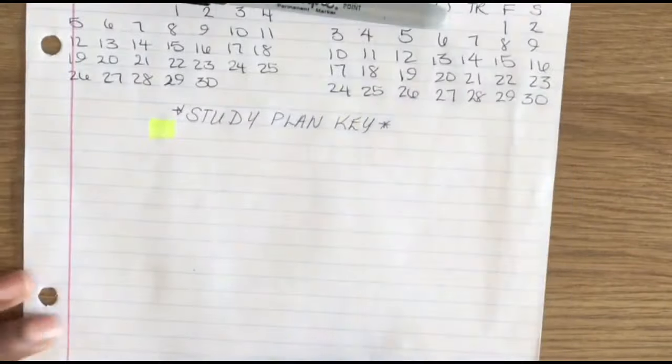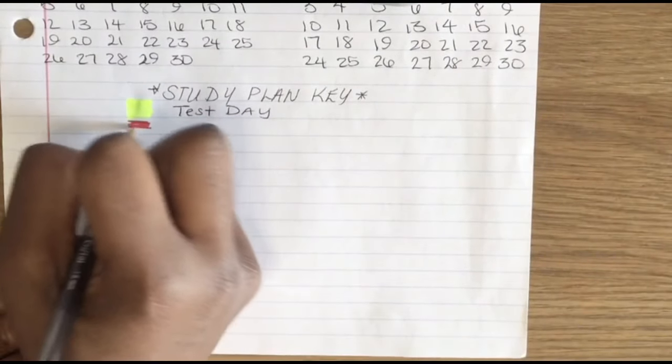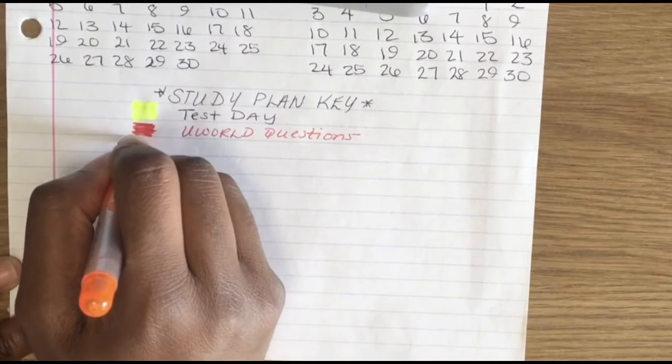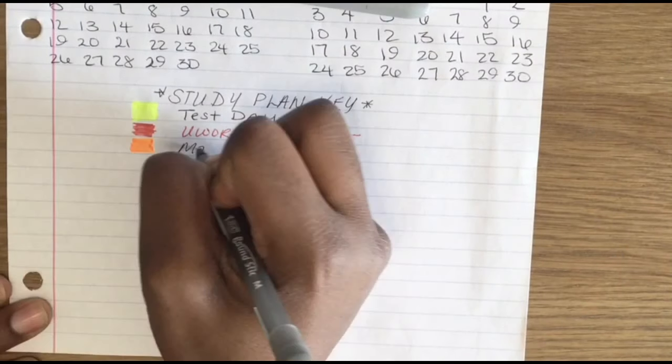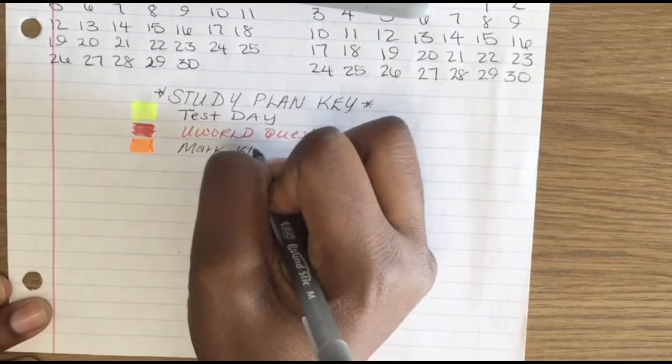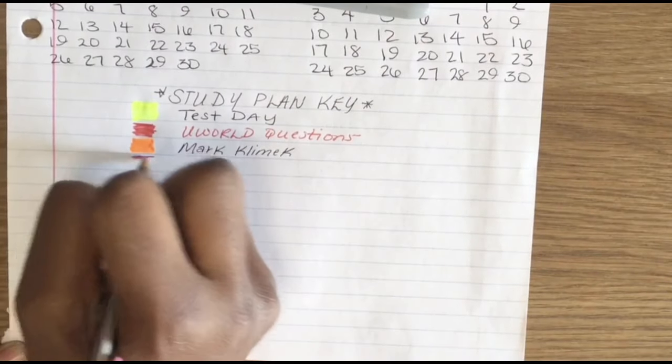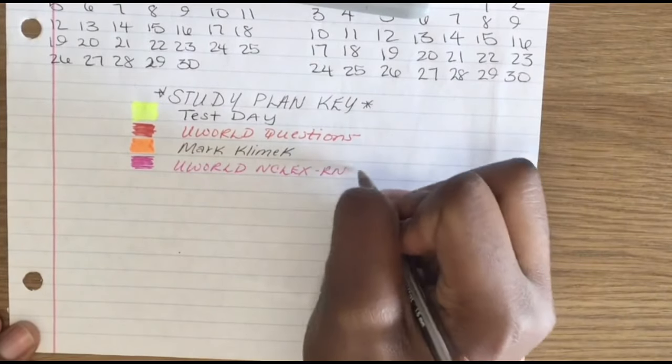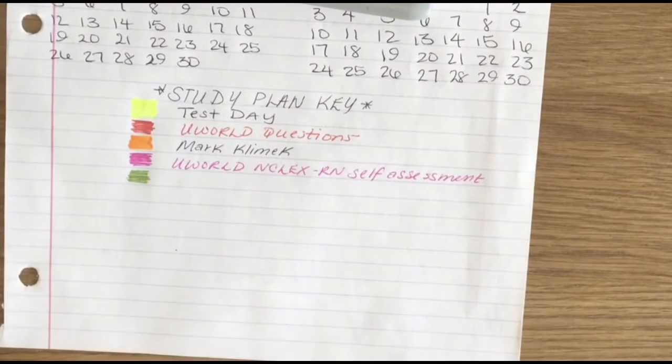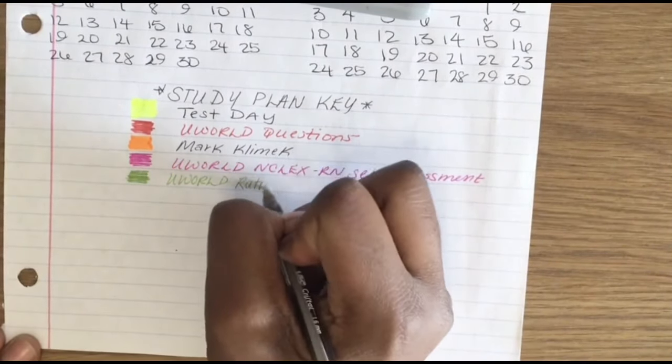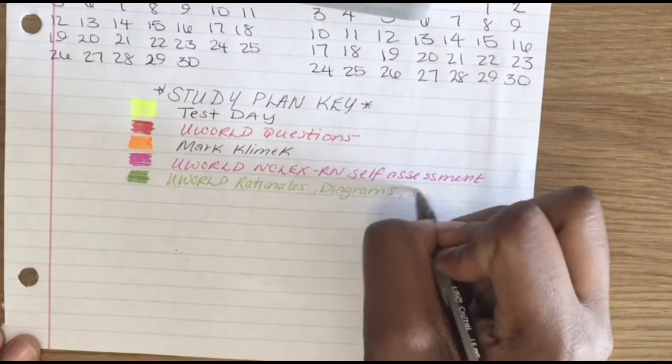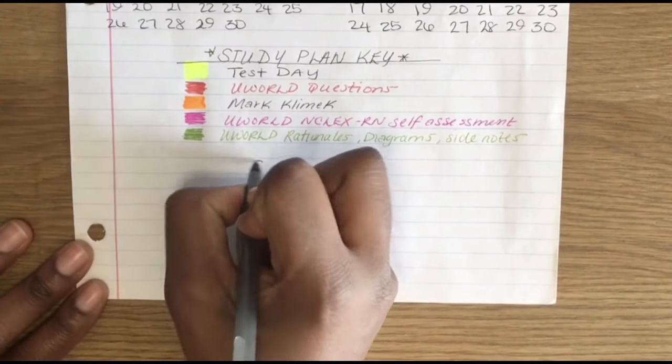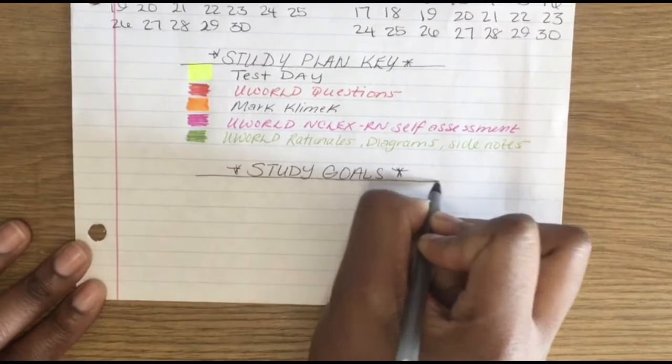Yellow is for my NCLEX test date. Red was for the days that I did Uworld. Orange was for the days when I listened to the Mark Klimek lectures or when I reviewed those notes. Pink represented the day that I had chosen to take my NCLEX self-assessment on Uworld. And green was for those days that I decided I didn't want to do any questions and I would just be reviewing Uworld rationales.